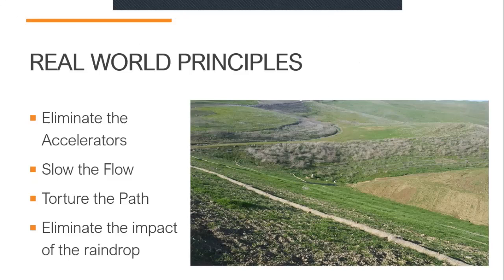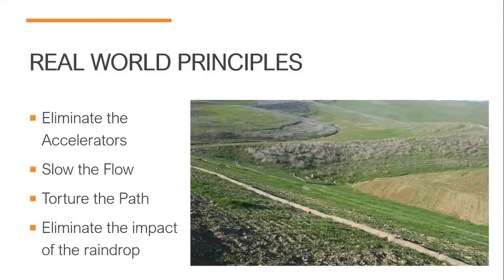Let's review. You want to write effective SWIPs and avoid failure on your job sites? You've got to understand these principles, you've got to understand your erosion theory. Review those four principles: eliminate the accelerators; slow the flow down; torture the path — get as many obstacles as you can, because we want sedimentation to happen on-site, not off-site; and eliminate the impact of the raindrop. If you understand erosion theory and these principles, you will have effective SWIPs and well-managed sites.